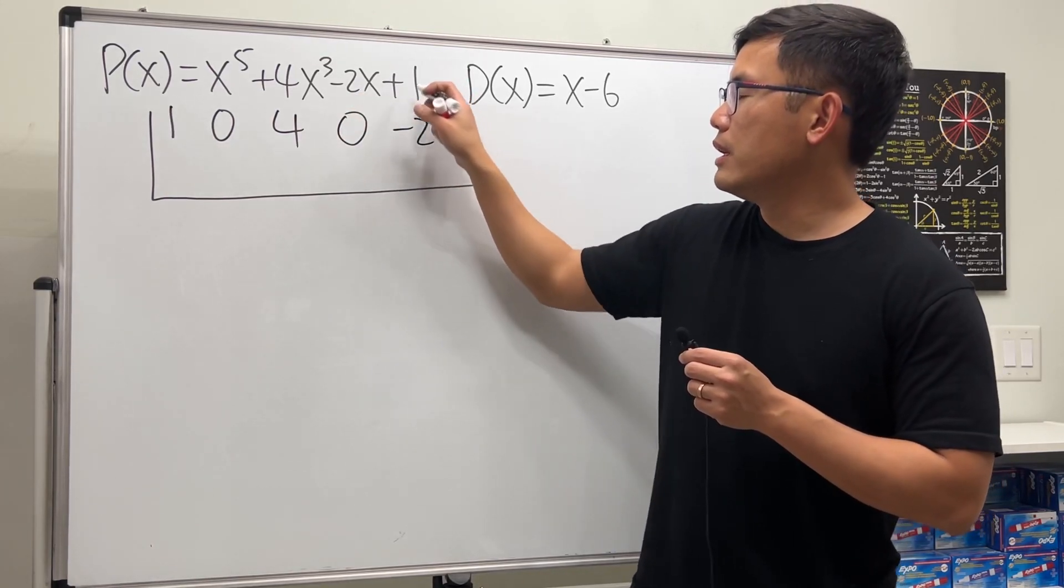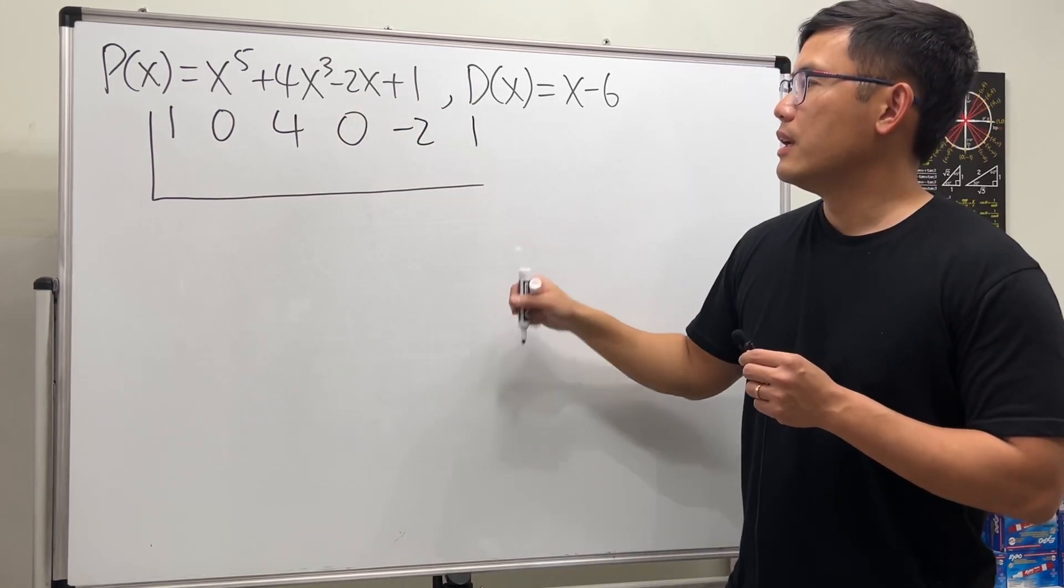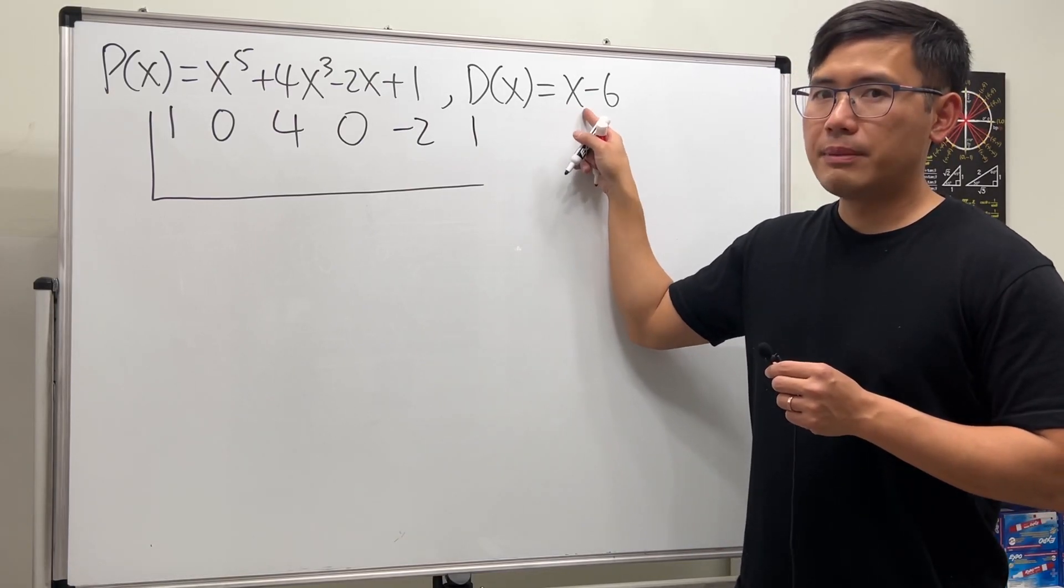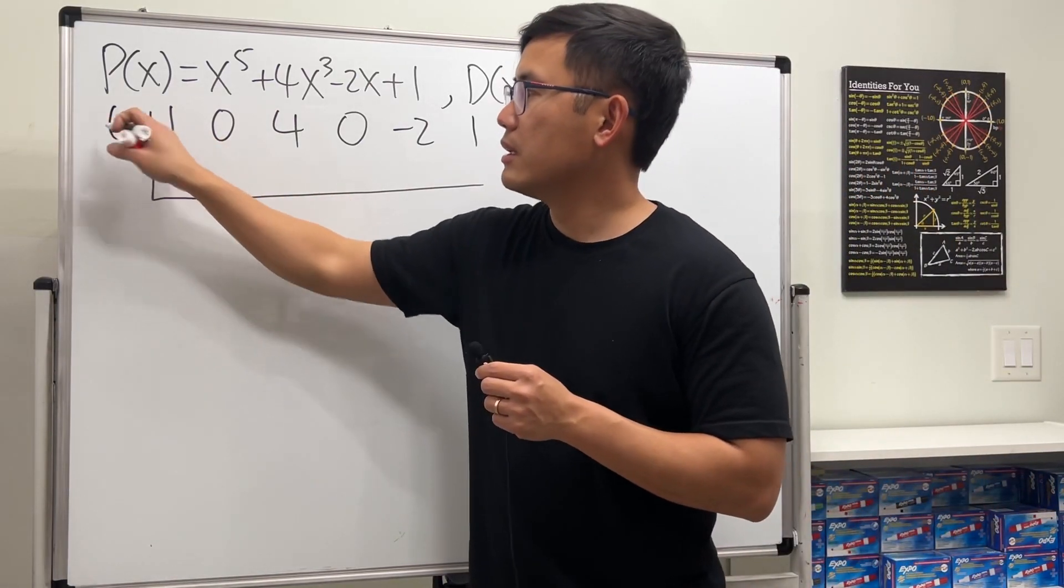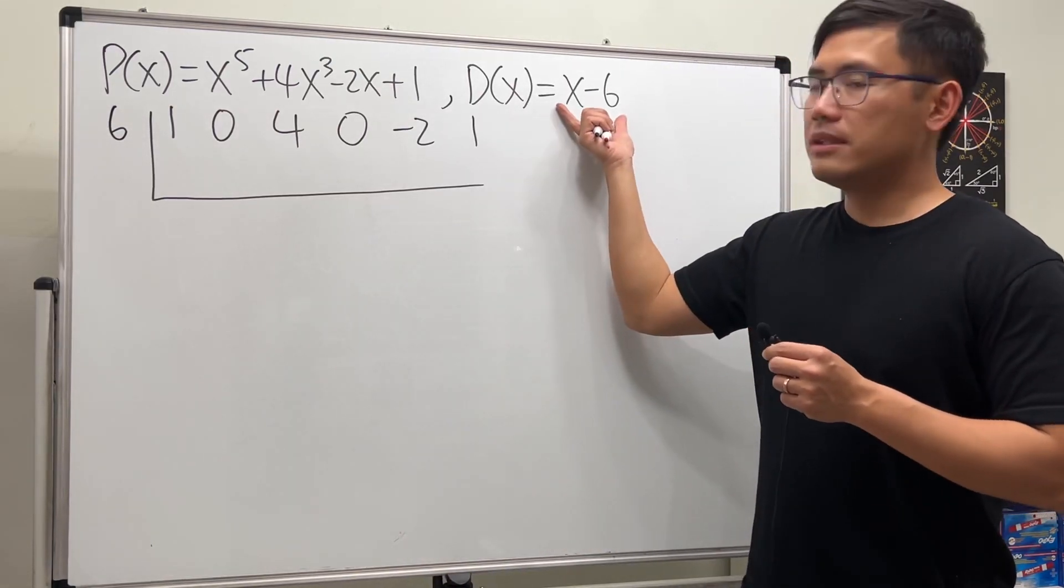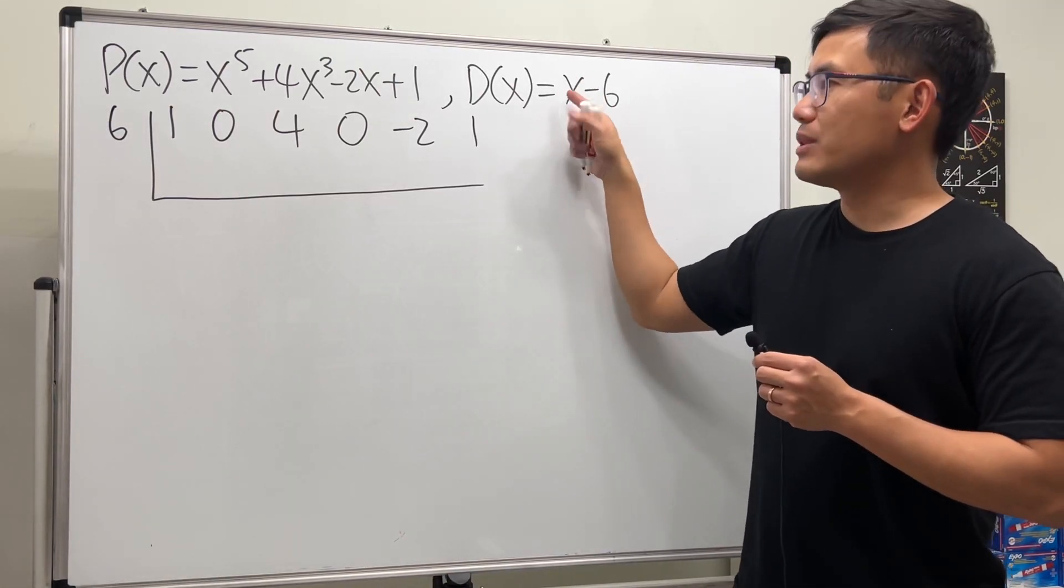And continue: negative 2, and lastly we have the 1. Because we're dividing by x minus 6, we are going to put the 6 here. How we can make this 0? x has to be 6, right? So it's a 6, or you can just look at this and do the opposite.